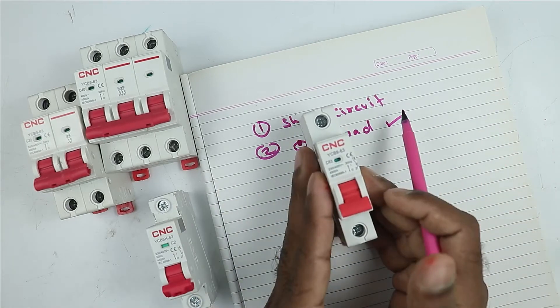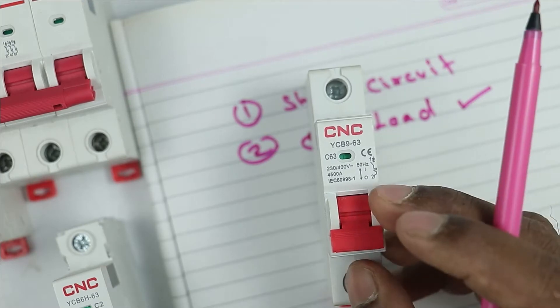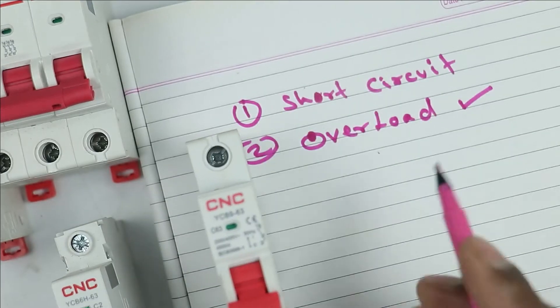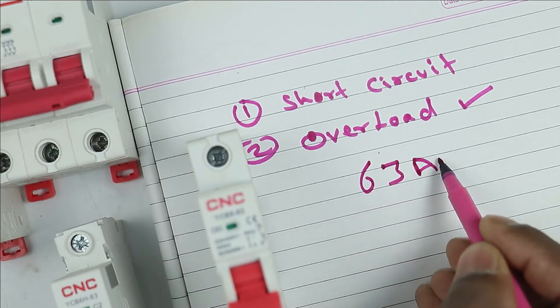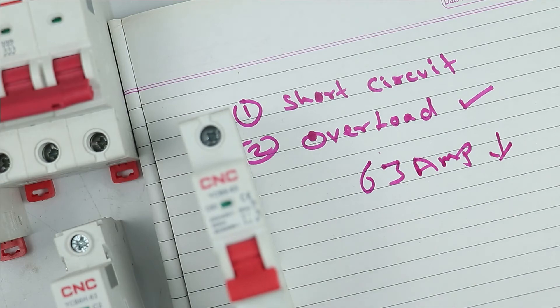Now here in this MCB, if you look above the MCB here, current rating is written. Like in this MCB here it is written 63. This means this MCB will trip at 63 ampere. If current flows below this value, this MCB will not trip.